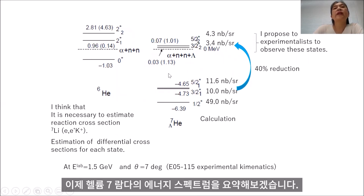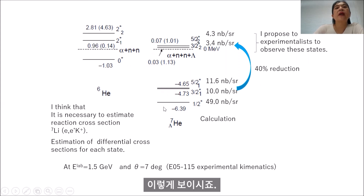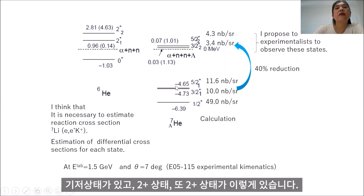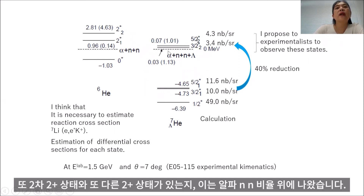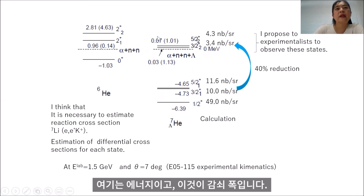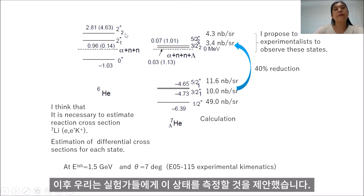We summarize the energy spectra of Helium-7-lambda. We have a ground state, a first 3/2+ state, and also a second 3/2+ state above the alpha-NN threshold, with its corresponding energy and decay width. This second 3/2+ state corresponds to the second 2+ state of Helium-6. We propose to experimentalists that they measure this state.